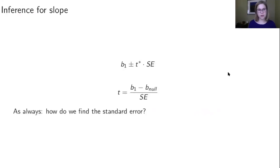We're going to do inference for the slope—both a confidence interval and a hypothesis test. Our general format for a confidence interval is point estimate ± critical value × standard error. In the case of linear regression, our point estimate is b₁, our critical value is from a t distribution, and we need to think about the standard error.